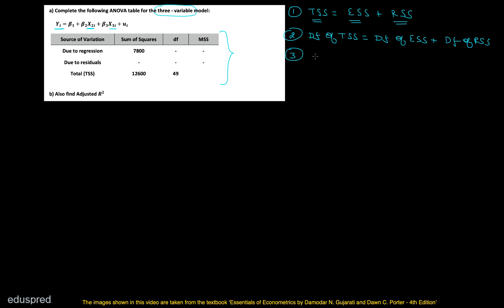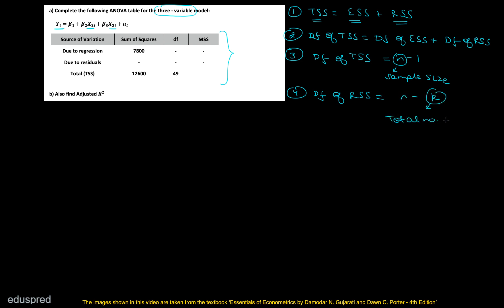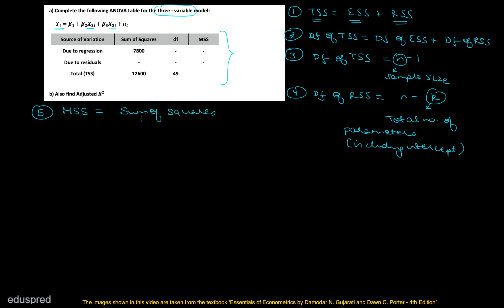The third rule is that degrees of freedom of TSS is equal to n minus 1, where n is the sample size. The fourth rule is that degrees of freedom of RSS is equal to n minus k, where k is the total number of parameters including the intercept. The fifth thing is that mean sum of squares is equal to sum of squares divided by degrees of freedom.